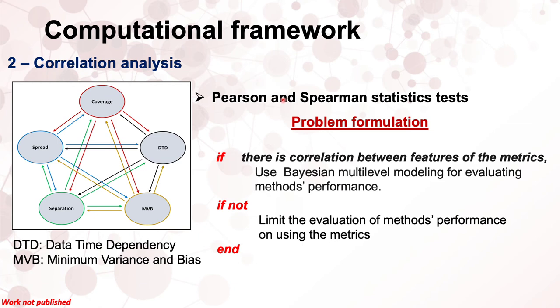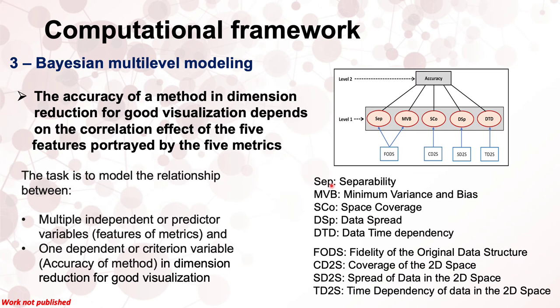In the correlation analysis, we use Pearson and Spearman coefficients to measure the statistical relationship between the features of metrics describing the accuracy of a method. The conditional framework is defined such that if there is a correlation between features of a metric for good visualization, then the evaluation of the method should take that correlation into account. If there is no correlation between features of a metric, evaluation of the method can rely on using the metrics independently. The task of Bayesian multilevel modeling is to explain the relationship between multiple independent variables, which are features of the metrics, and one criterion variable, which is the accuracy of a method.